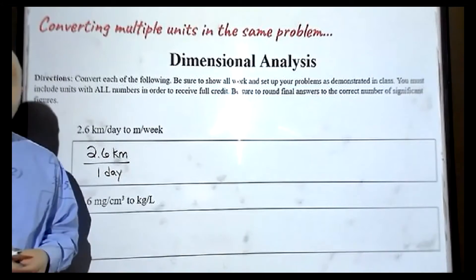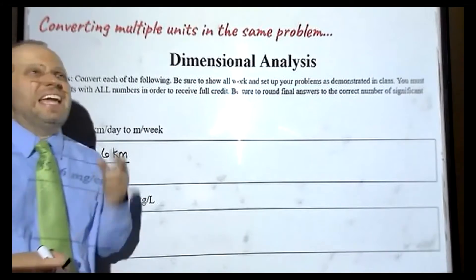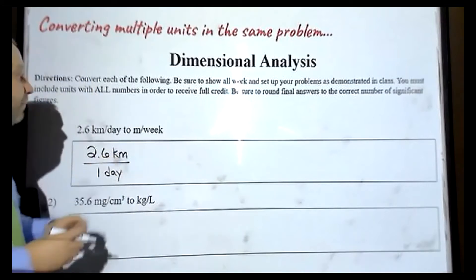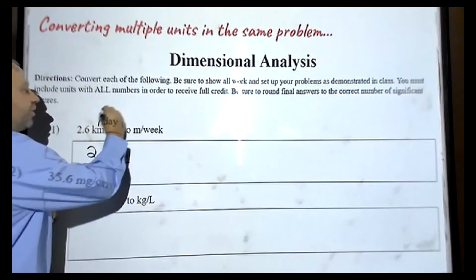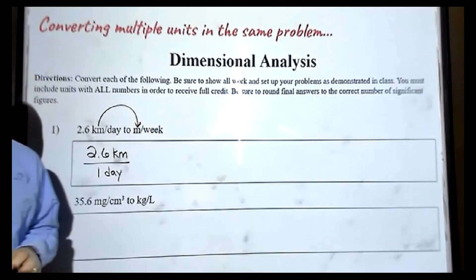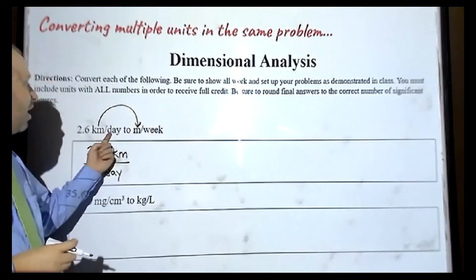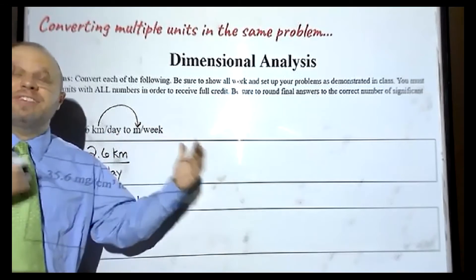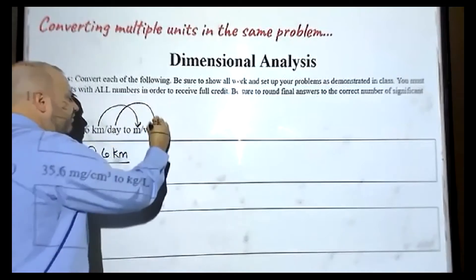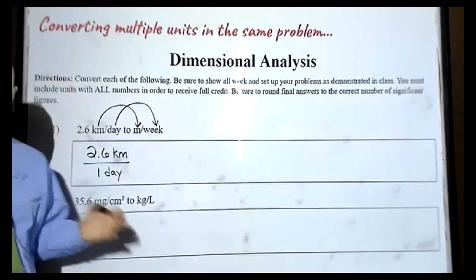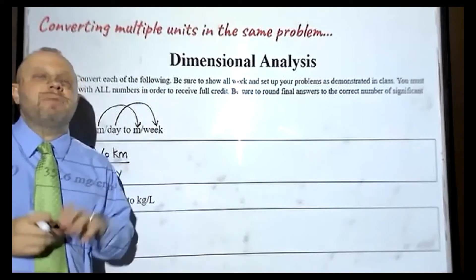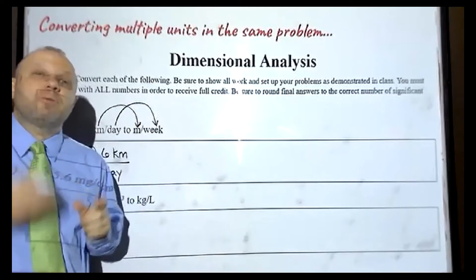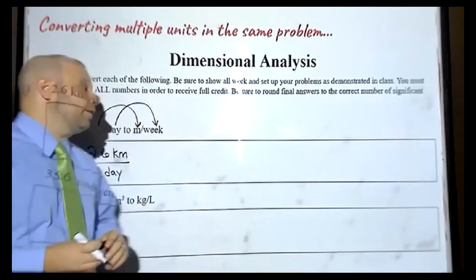When we're converting units, it has to be the same type of unit that we convert to. So if we have a length on top like kilometers, that gets converted to a different length — in this case, we're going to convert that to meters. On the bottom of our fraction, in the denominator, we have days, which is a length of time. So we're going to take that to weeks, which is also a length of time. We can't go from a length to a day, because that's two different types of quantities. But we can go from one length to another, and one unit of time to another.